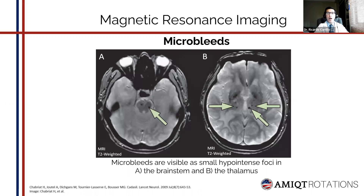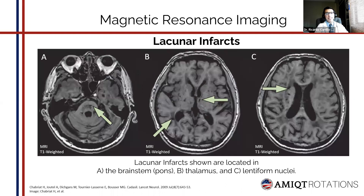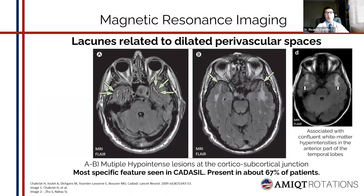Continuing with microbleeds: on A, we can see small hypointensities on the brainstem, and on B, microbleeds in the thalamus. In CADASIL, we can also see lacunar infarcts — on image A in the pons, on B in the thalamus, and on C in the lentiform nuclei. Another lesion to highlight: multiple hypointense lesions at the cortico-subcortical junction are lacunes related to dilated perivascular spaces. These lesions are the most specific features seen in CADASIL, present in about 67% of patients, and are associated with the white matter hyperintensities seen previously on the anterior temporal lobes.